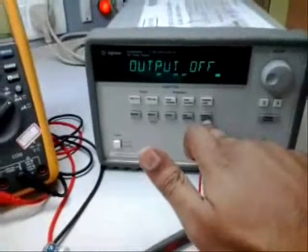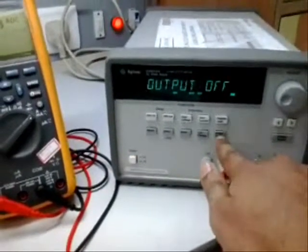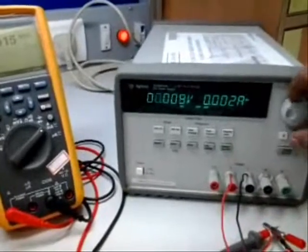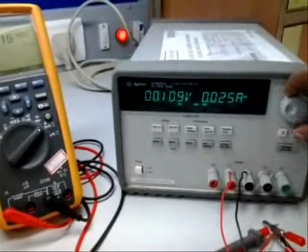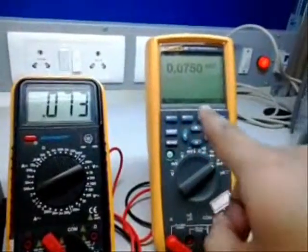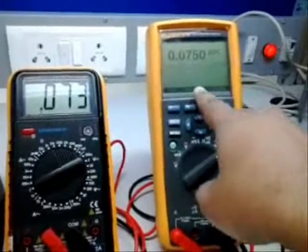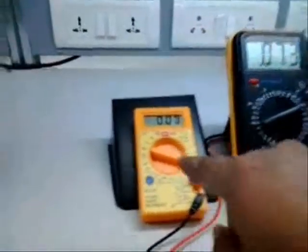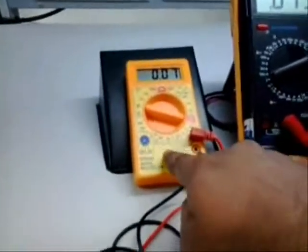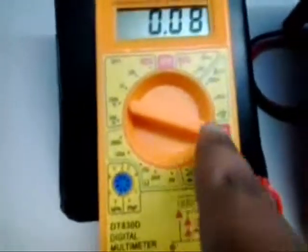So first I am going to apply 3.3. We saw that it is 3.3. You can see here the current is 75. So all of these are showing different readings.